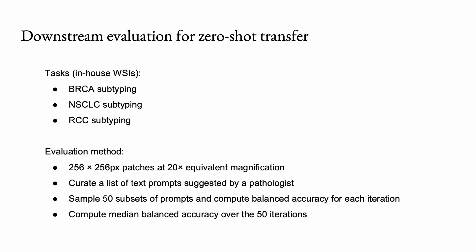We evaluate downstream zero-shot transfer performance on three routine cancer subtyping tasks: BRCA subtyping, NSCLC subtyping, and RCC subtyping, using in-house whole-slide images. For all tasks, we patch the WSIs into 256 by 256 patches at 20x magnification. Since zero-shot transfer can be fairly sensitive to the choice of text prompts, to better capture this variance in performance, we sample 50 subsets from a list of text prompts suggested by a pathologist and compare the median balanced accuracy across the 50 sample prompt sets.